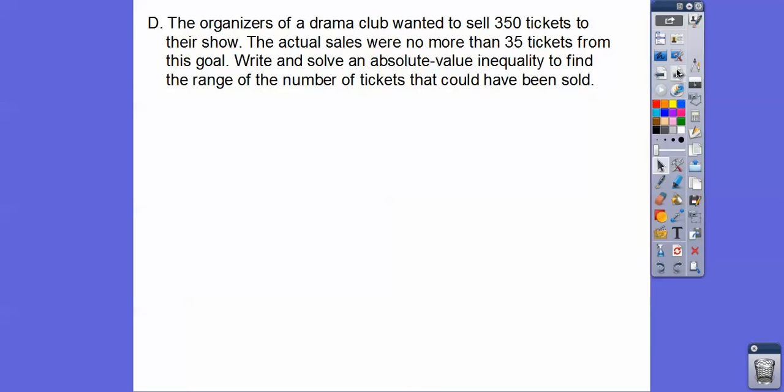All right, so the organizers of a drama club wants to sell 350 tickets to their show. The actual sales were no more than 35 tickets from this goal. So that means it could be over or it could be less. So it says write and solve an absolute value inequality. So we're going to write an absolute value inequality, not just solve. We're going to write and solve the absolute value inequality to find the range of numbers of tickets that could have been sold. So there's our absolute value inequality. So the number of tickets, subtract 350, we know is no more than, so less than or equal to that 35 right there.